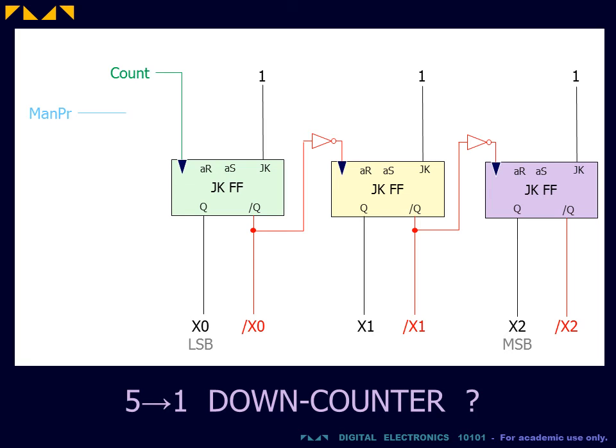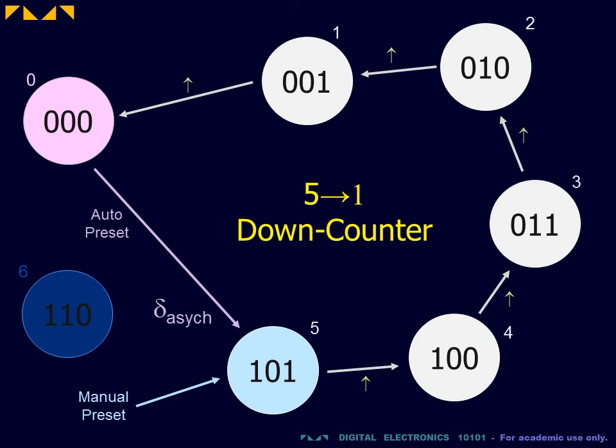We will now implement the 5 to 1 down counter. From the state diagram, we see that the new initial state is the 1 0 1 state. The down counter will then count 5, 4, 3, 2, 1.